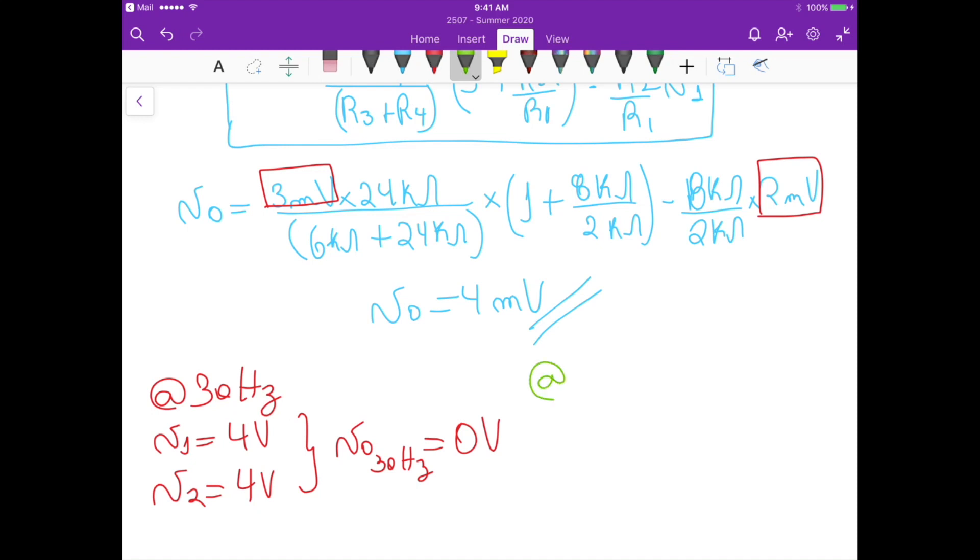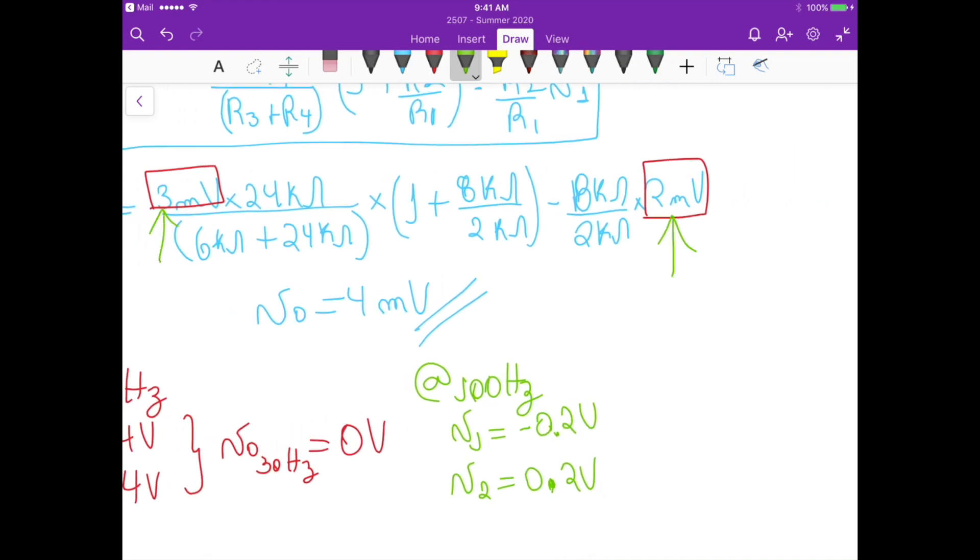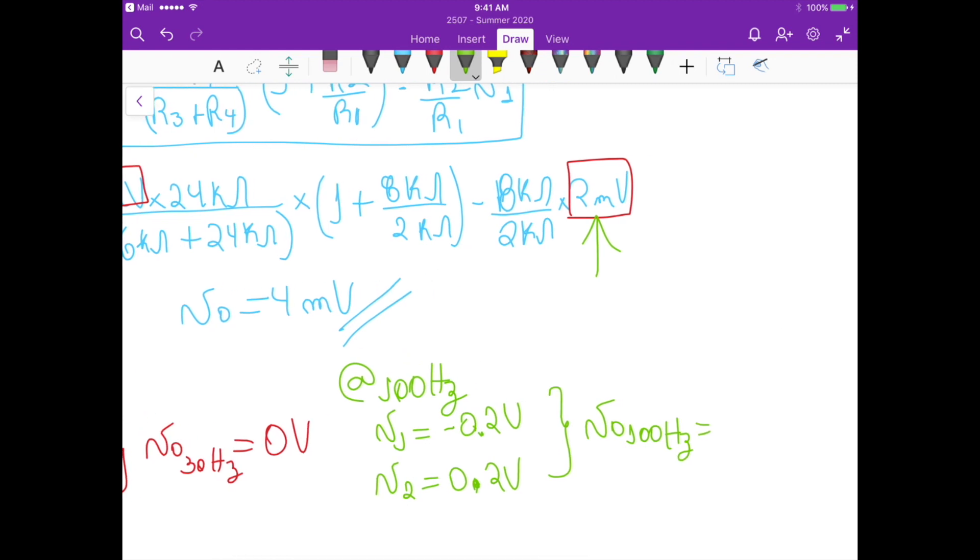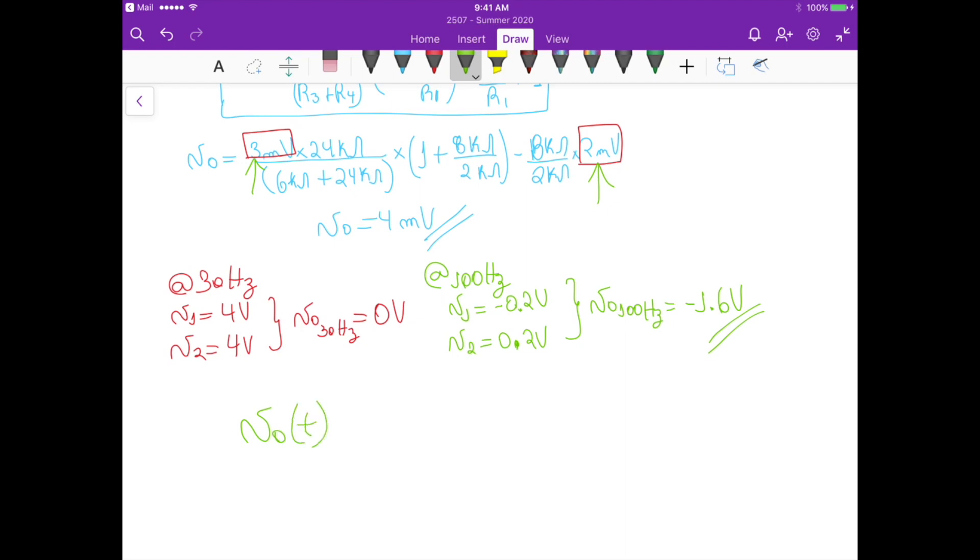Now at 100 hertz, we have that V1 is equals to minus 0.2 volts, and V2 is equals to 0.2 volts. So if we substitute now here and there by 0.2 volts, this gives us an output voltage at 100 hertz that's equals to minus 1.6 volts. So at the end our Vout is equals to 0, so there's no component at 30 hertz because it's just zero times the sine of 2 pi 30 t, so there's no component at 30 hertz, but for 100 hertz we have minus 1.6 times sine of 2 pi times 100 t volts, and that's the final answer for this second part.